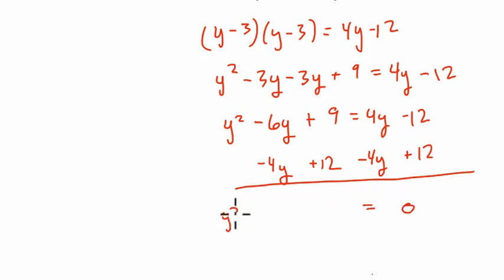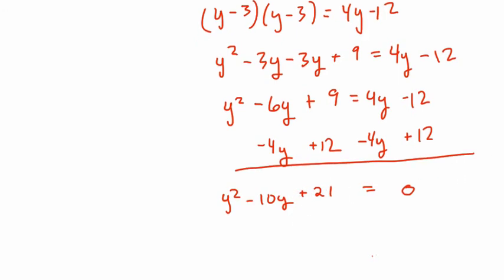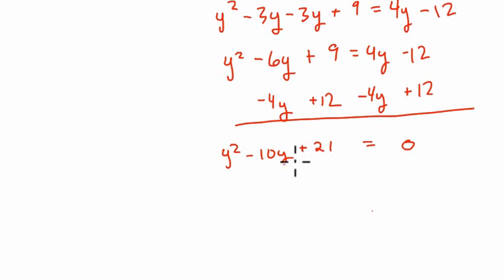We have y squared minus 10y, right? Negative 6 and negative 4 is negative 10, and then plus 21. All right, so here we get y squared minus 10y plus 21.